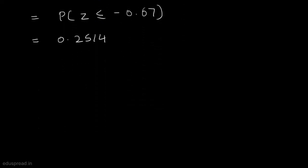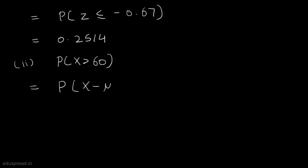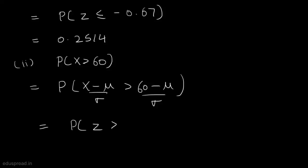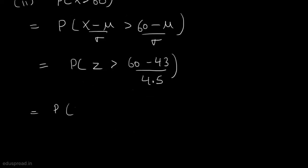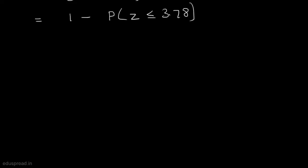So the probability that the yield strength is at most 40 is 0.2514. Now for the probability that x is greater than 60: converting to standard normal gives the probability that z is greater than (60 minus 43) divided by 4.5, which equals the probability that z is greater than 3.78. Using the complement rule, this is 1 minus the probability that z is less than or equal to 3.78, which is approximately 1 minus 1, equal to 0.